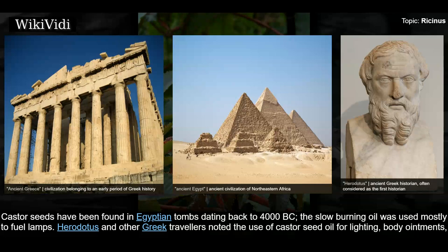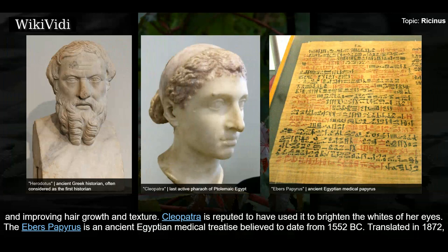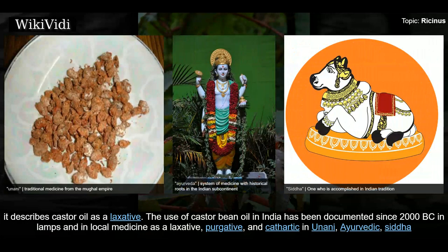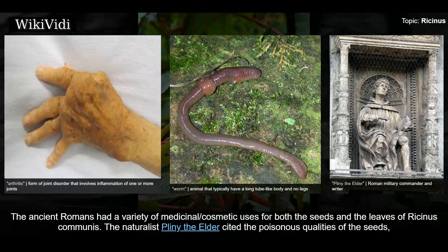Castor seeds have been found in Egyptian tombs dating back to 4000 BC. The slow-burning oil was used mostly to fuel lamps. Herodotus and other Greek travelers noted the use of castor seed oil for lighting, body ointments, and improving hair growth and texture. Cleopatra is reputed to have used it to brighten the whites of her eyes. The Ebers Papyrus, an ancient Egyptian medical treatise believed to date from 1552 BC, describes castor oil as a laxative. The use of castor bean oil in India has been documented since 2000 BC in lamps and in local medicine as a laxative, purgative, and cathartic in Unani, Ayurvedic, Siddha, and other ethno-medical systems. Traditional Ayurvedic and Siddha medicine considers castor oil the king of medicinals for curing arthritic diseases, and it is regularly given to children orally for deworming.